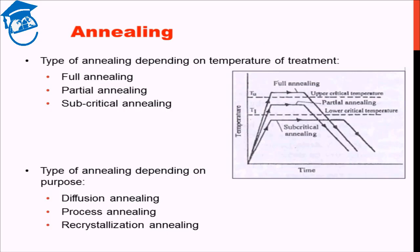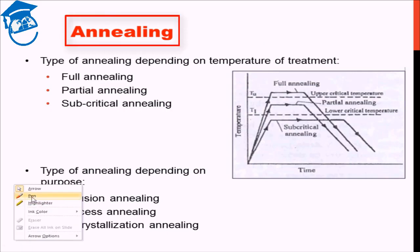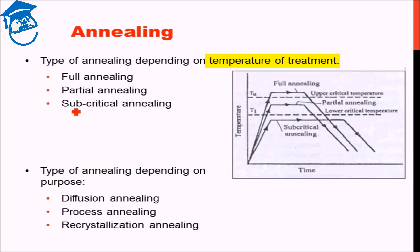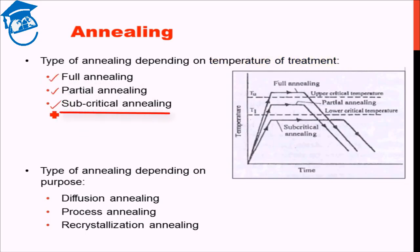The different kinds of annealing processes can be divided depending on different parameters. First, depending on what temperature the annealing is being carried out. Based on that, we can have either full annealing, partial annealing, or subcritical annealing.